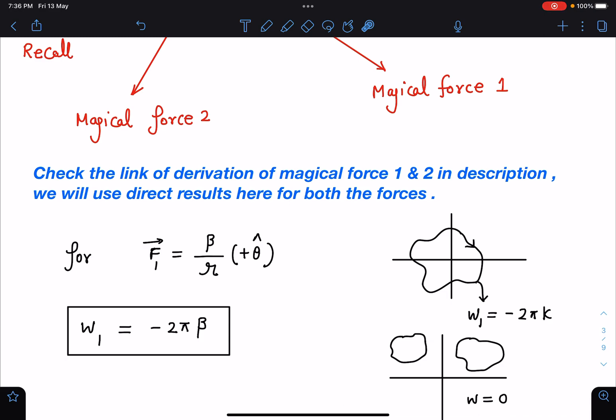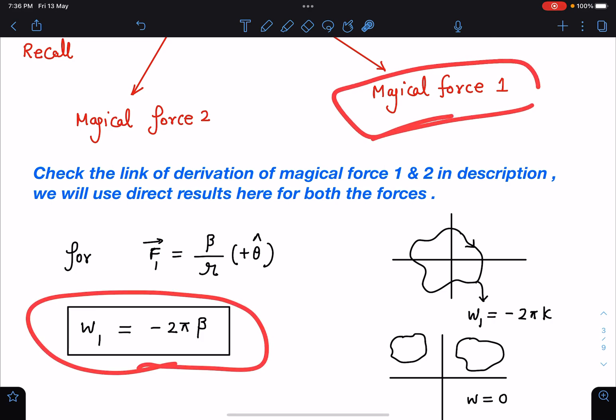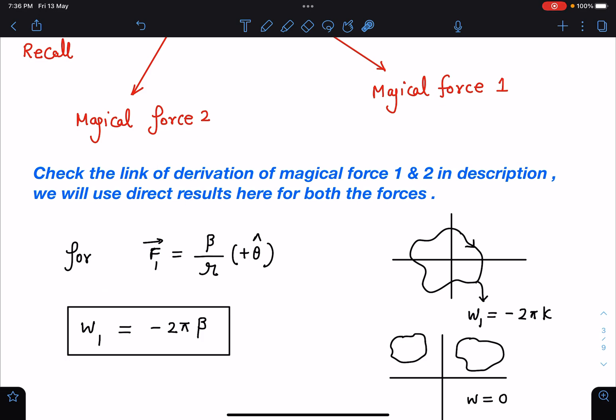Here if it is k by r where k is beta in this problem, and if it is clockwise it will be minus 2 pi k. So here answer will become minus 2 pi beta. I will recommend again please see this video and try to learn these results, their general results will work in any situation. If path contains origin the work is there, and if path does not contain origin in that case work will be zero.